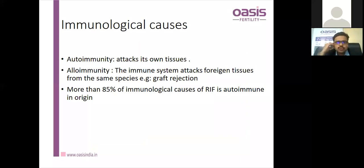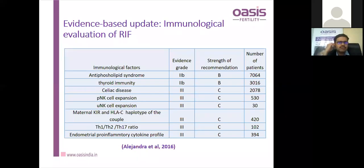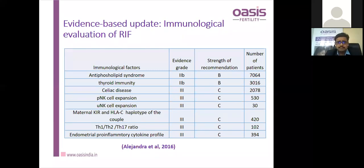Immunological causes include autoimmunity attacking own tissues and alloimmunity (foreign tissue/graft rejection). Autoimmune causes include SLE, rheumatoid arthritis, Hashimoto's thyroiditis, secondary causes related to endometriosis, and idiopathic reasons. The list of immunological causes affecting implantation and causing RIF includes antiphospholipid antibody syndrome, thyroid autoimmunity, celiac disease, peripheral and uterine natural killer cells, and maternal KIR and HLA-C haplotype.